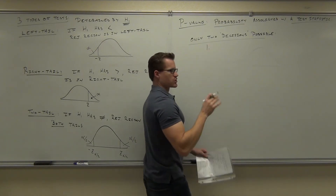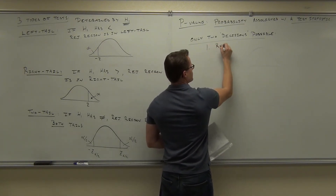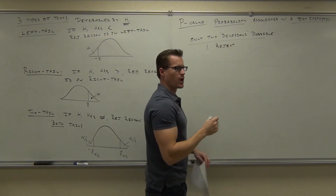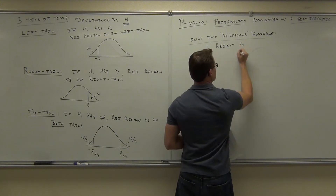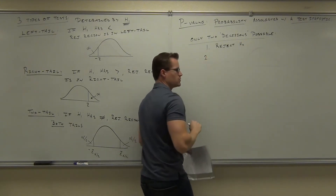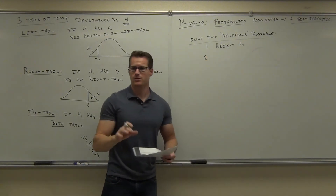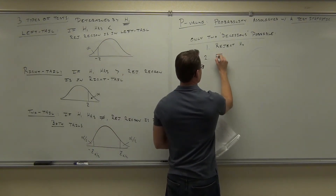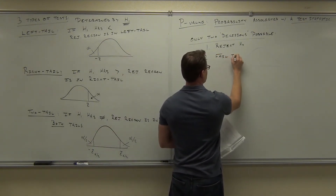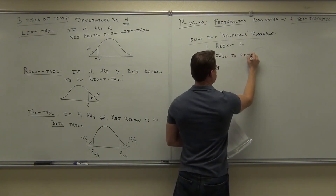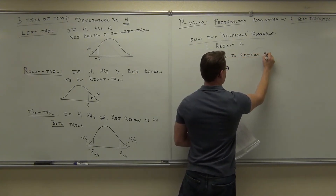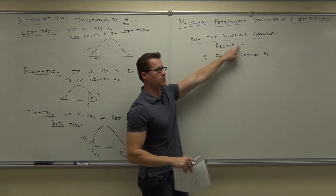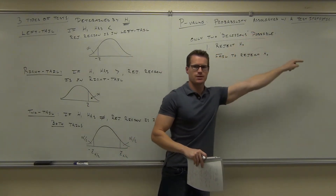If it's in the rejection region, you are going to reject H₀, the null hypothesis. If it's in the fail-to-reject region for the traditional method, you fail to reject. In this case, if you reject H₀, you accept H₁.